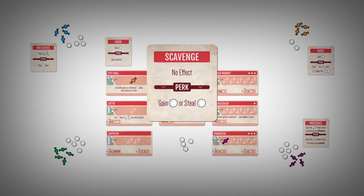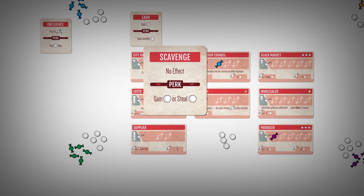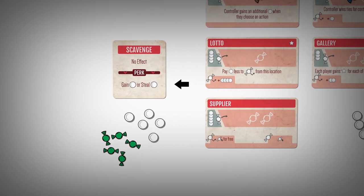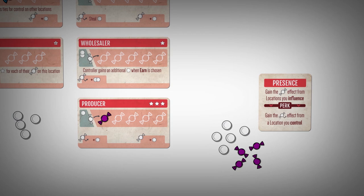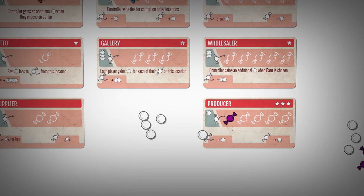The scavenge action does not provide an action for all players, only the player that selected it. That player can choose to gain one mint from the supply, or steal one mint from another player.